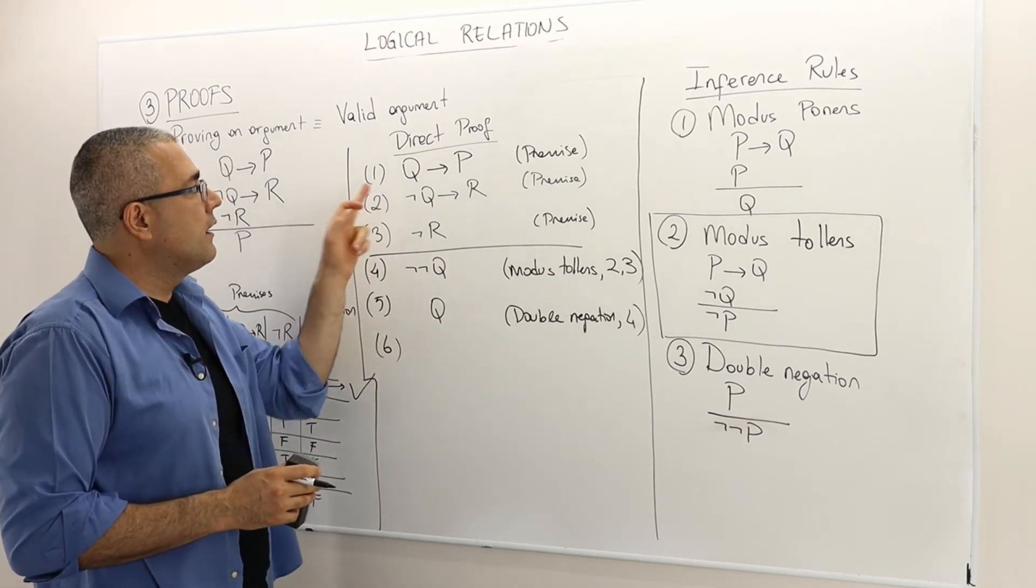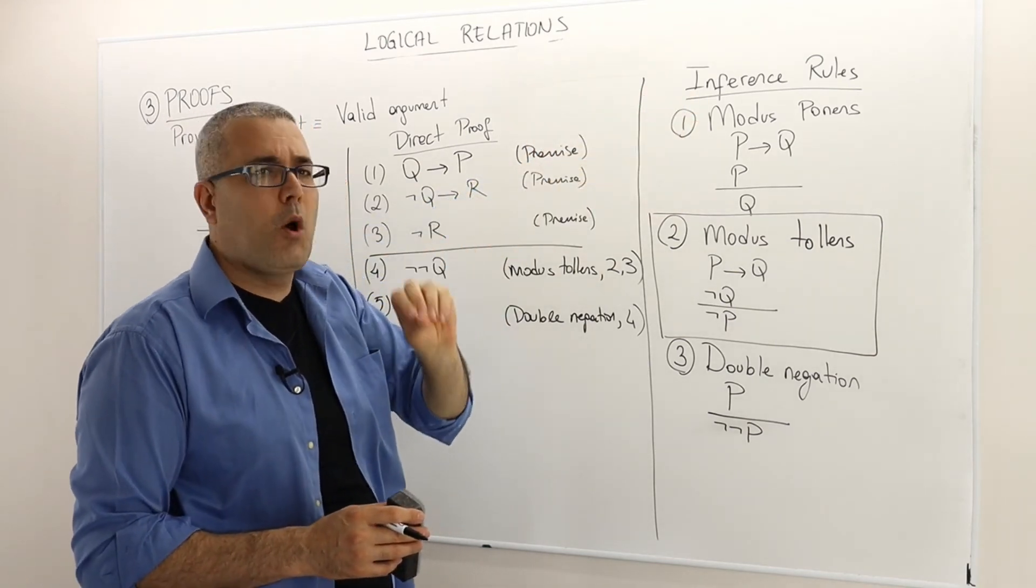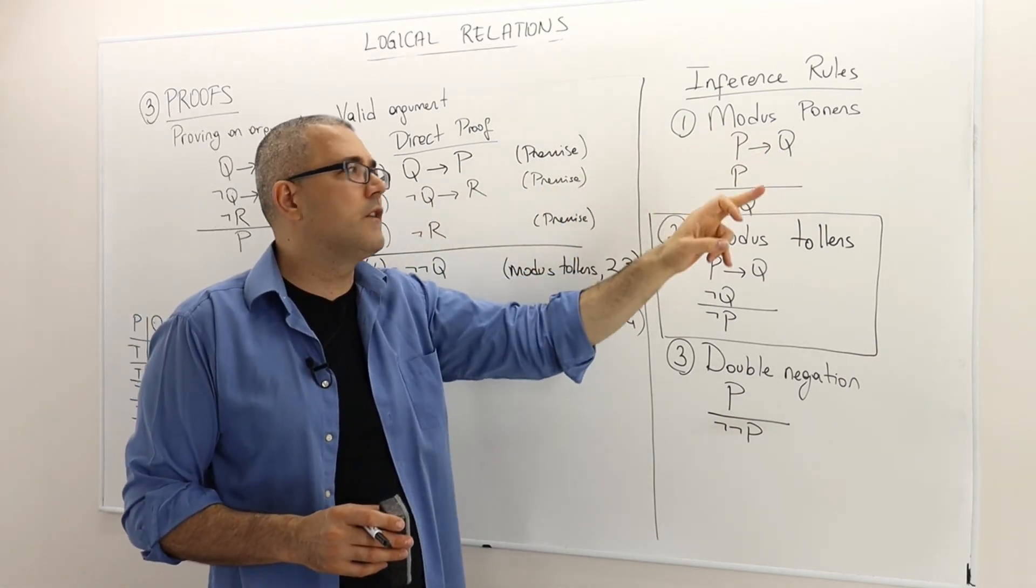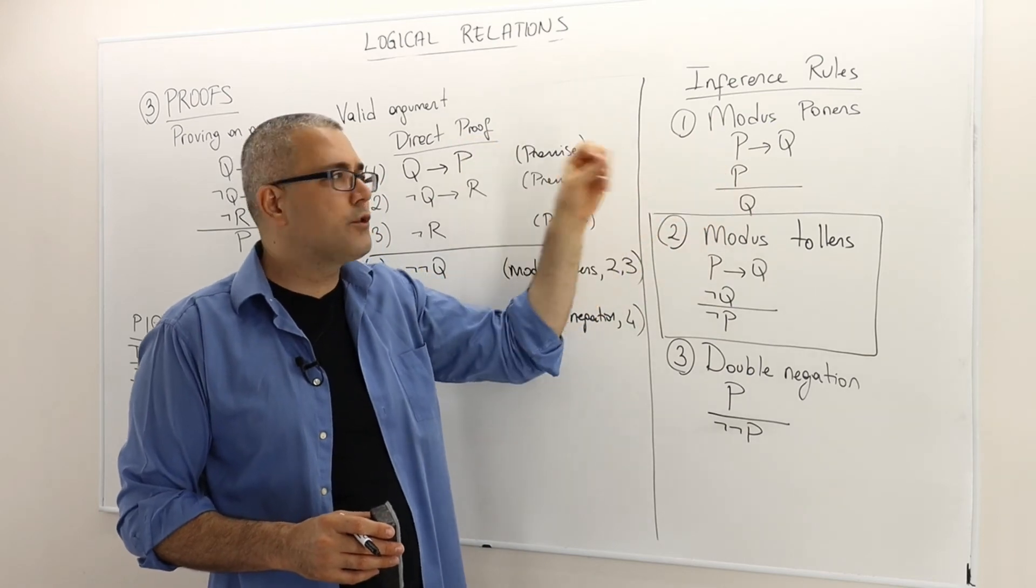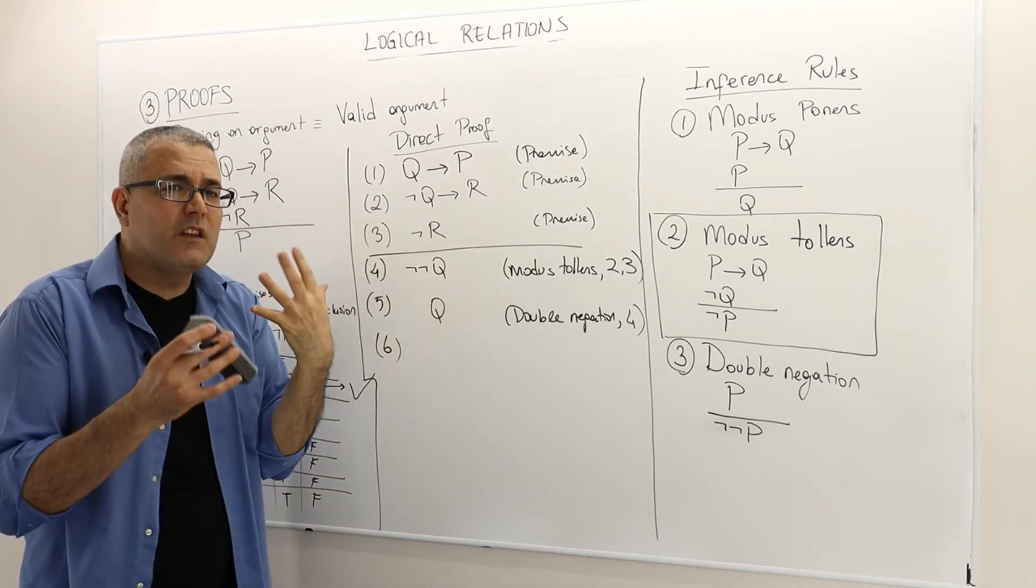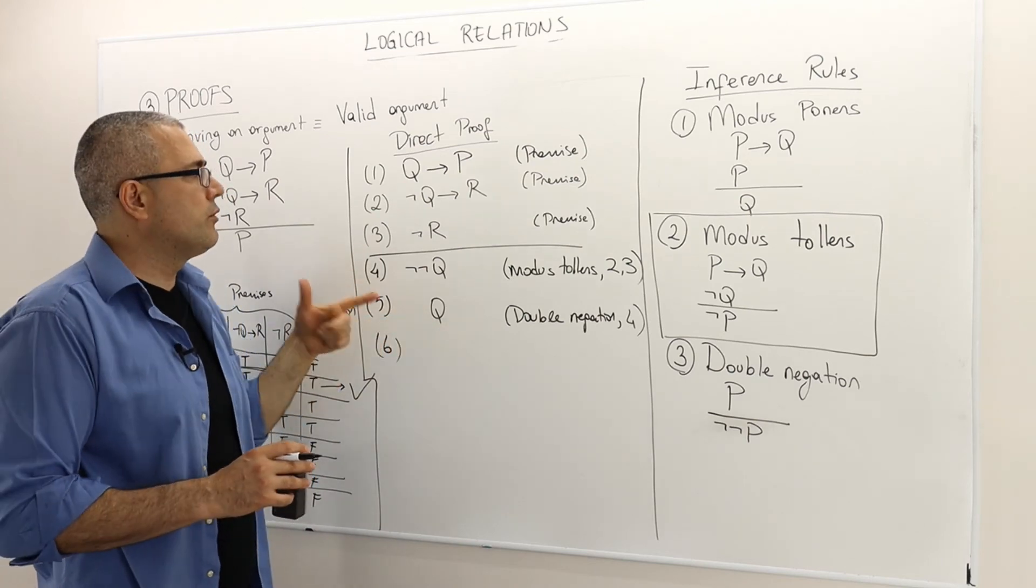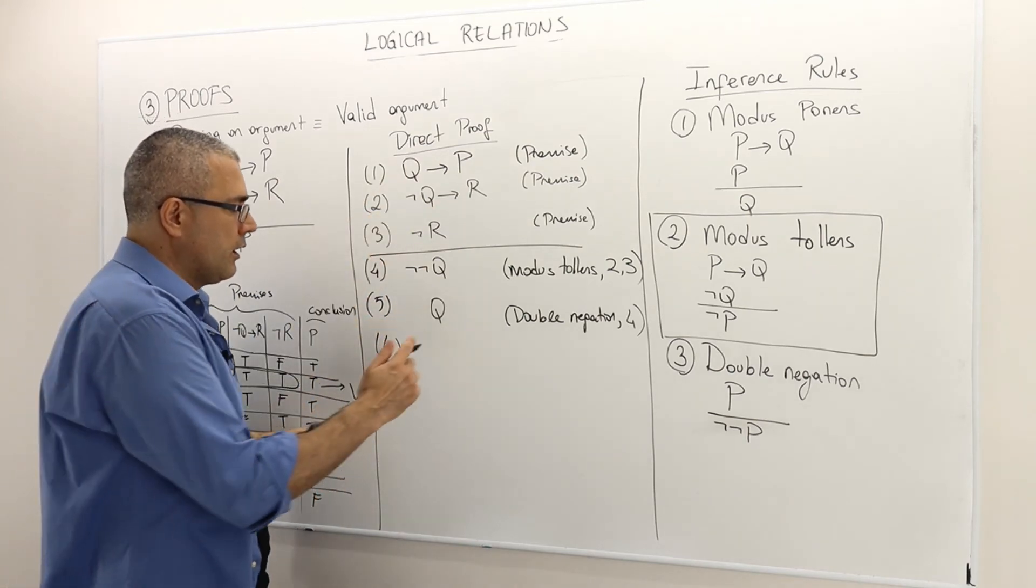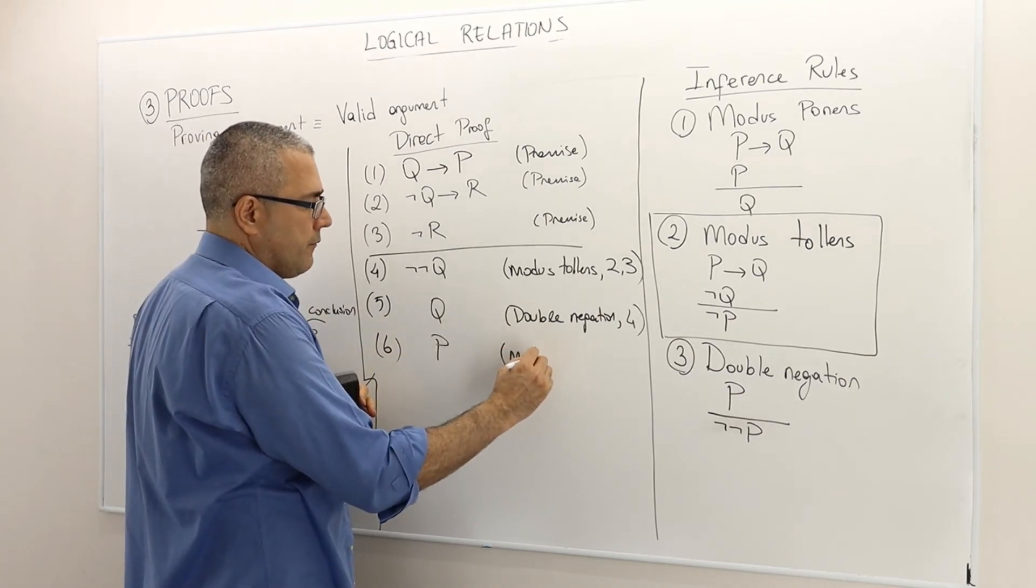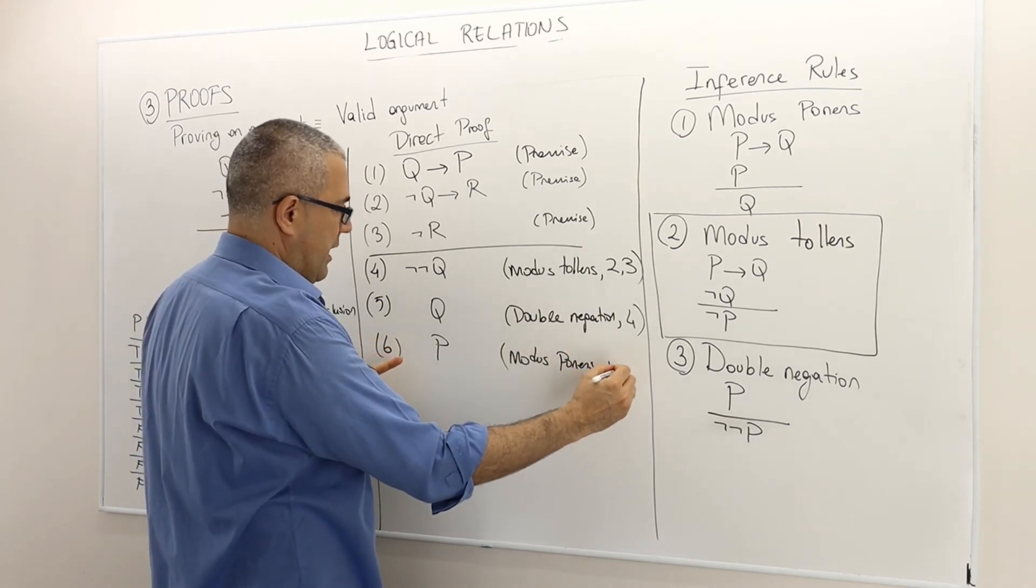I have Q implies P. So it seems like I can use the inference rule number one modus ponens. So if I have a situation like a conditional premise P implies Q, and then the first atomic sentence is true, then the second atomic sentence must be true. So I have a similar situation here. Q implies P is true. Q is true. I already shown that. So therefore P must be true. And this is a result or conclusion of modus ponens of arguments number one and number five.